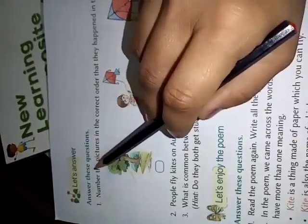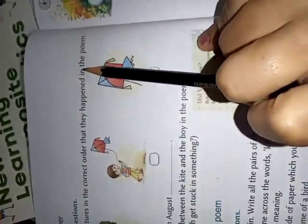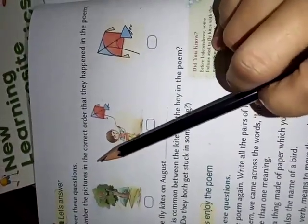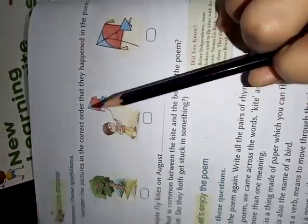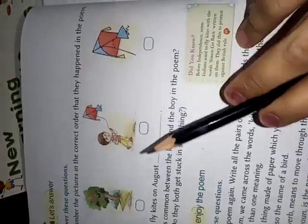Let's start with the first question. Answer these questions. Number the pictures in the correct order that they happened in the poem. I have explained to you the poem, so accordingly we will just set the numbers. Number 1, firstly the boy bought a kite, that is this will be the number 1.